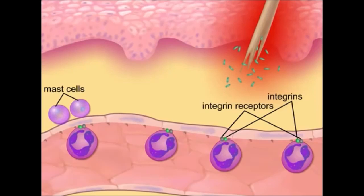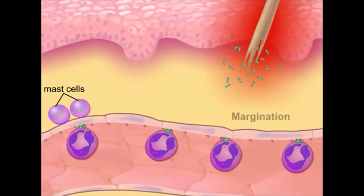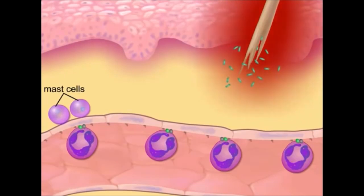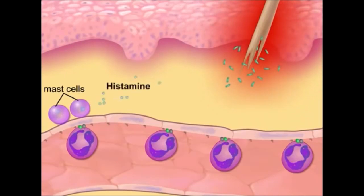This accumulation of neutrophils along the walls of the capillary is referred to as margination. The inflammatory mediators released by the injured tissue bring about changes in the environment that cause mast cells to degranulate and release histamine.